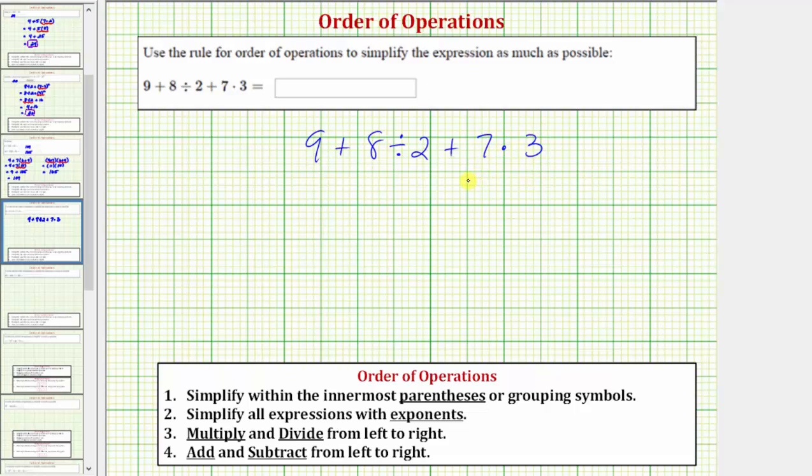Now there are four steps to the order of operations given below. We can actually skip the first two steps because notice how in step one our expression does not have any parentheses or grouping symbols and in step two our expression does not contain exponents.